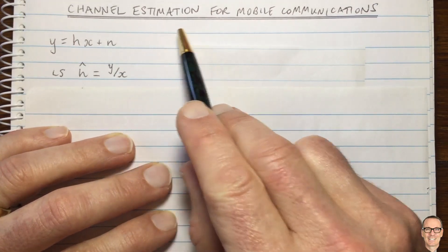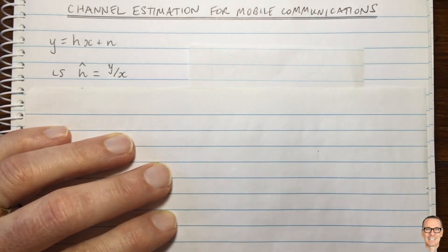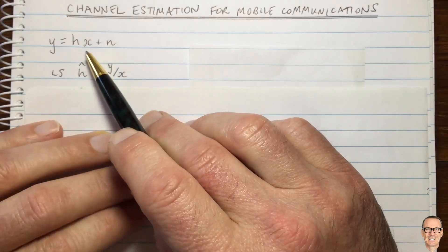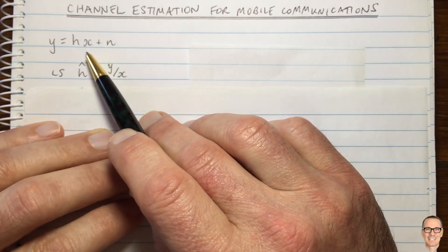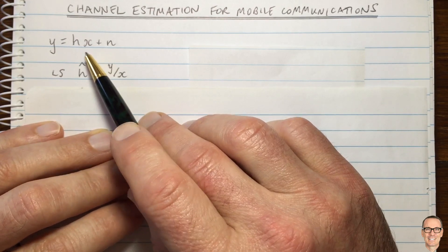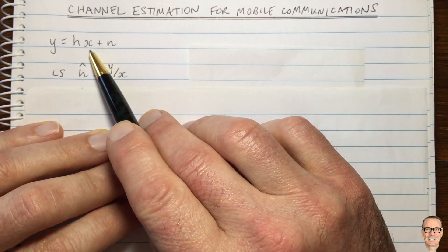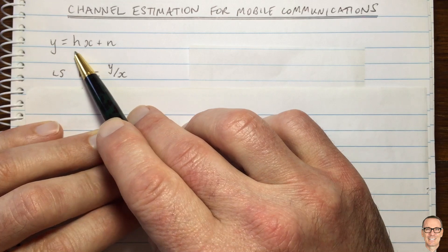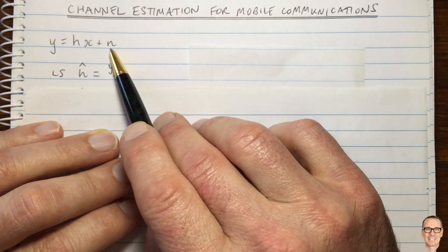Let's look at channel estimation for mobile communications. We're going to start with the narrowband channel. Here's the equation at baseband where X is your transmitted data symbol, H is the channel, and N is noise.